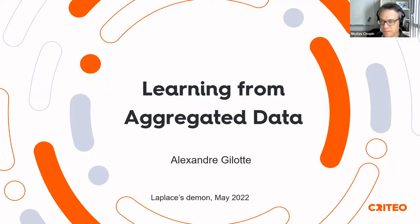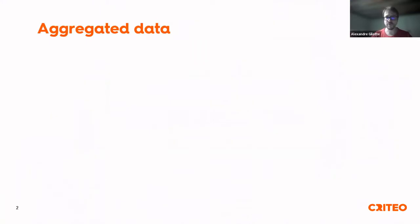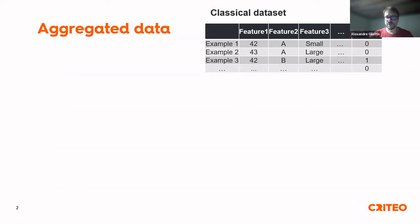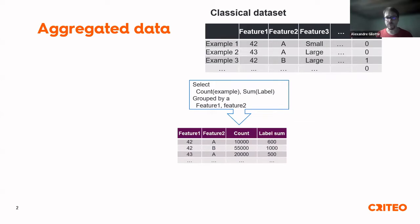As the title says, I'm going to talk about how we can learn a model when you have access to only aggregated data. Usually in machine learning we have a dataset presented line by line, where every line fully describes one example with several features and one label. In the case I'm interested in, the features will all be categorical features, and I'll just get a binary label.